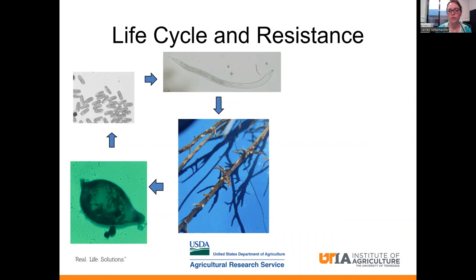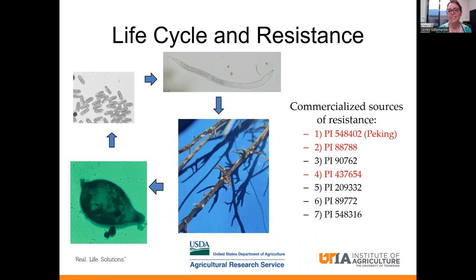Now, in order to fight this pest, there are seven commercialized sources of resistance. You might be familiar with the PI 548402 or the Peking source, the 88788 source, and another source of resistance that is available to growers is the PI 437654.